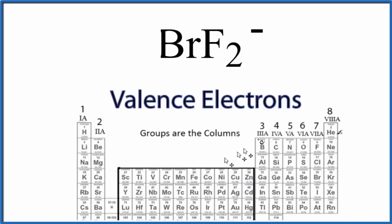We can see that bromine is in group 7A, also called 17, and bromine has 7 valence electrons. Fluorine is in the same group, so it'll also have 7 valence electrons.